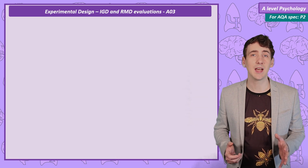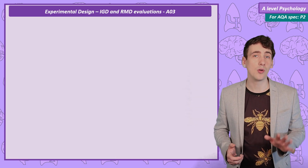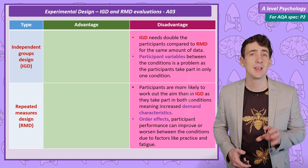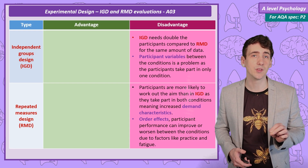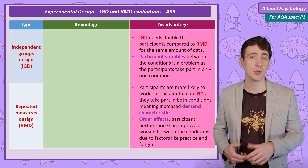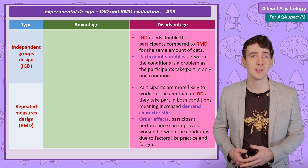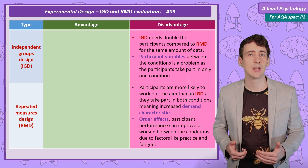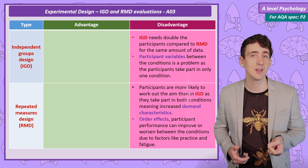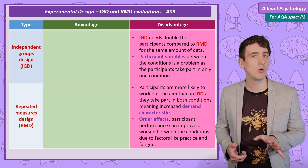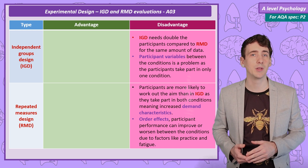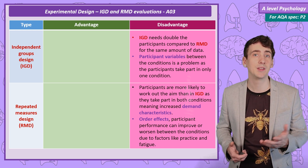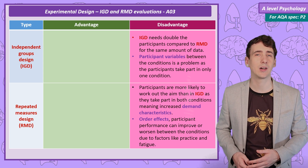Looking at the evaluations for both designs, there are other issues. A problem for independent groups is that this design needs more participants than repeated measures to produce the same amount of data. Another problem in repeated measures is that because participants complete two conditions, they're more likely to work out the aims of the experiment and change their behaviour to please the researcher — this is known as demand characteristics.